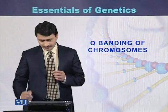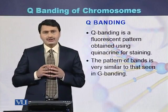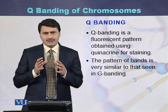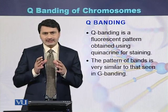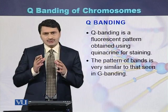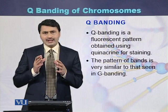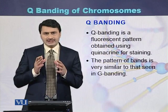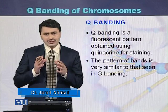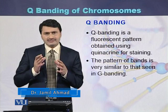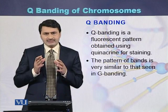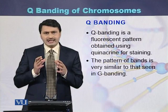Q banding of chromosomes is another method by which we stain the chromosomes. In this method we use a dye called quinacrine. In case of G banding we use the dye Giemsa, but in Q banding we use quinacrine. As a result, Q banding and G banding have similar patterns of dark bands and light bands.